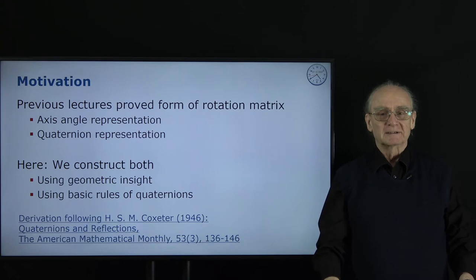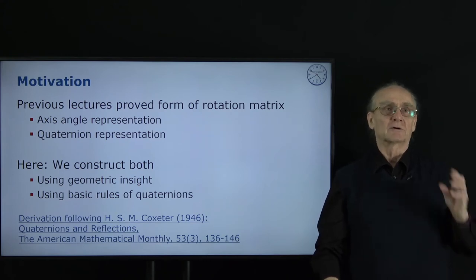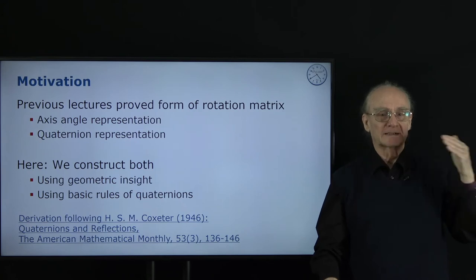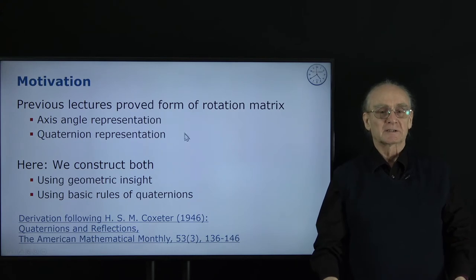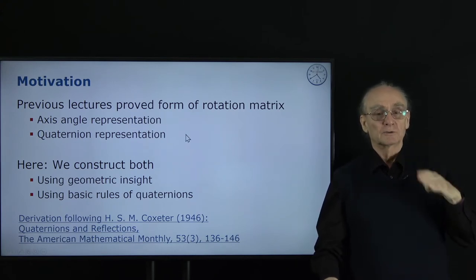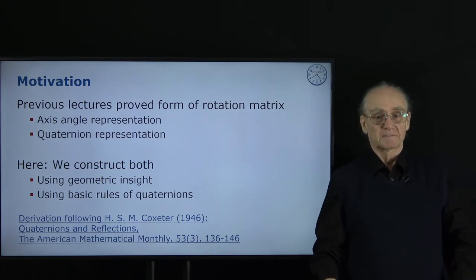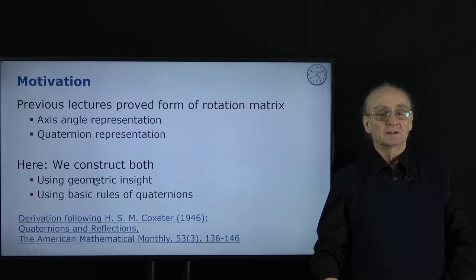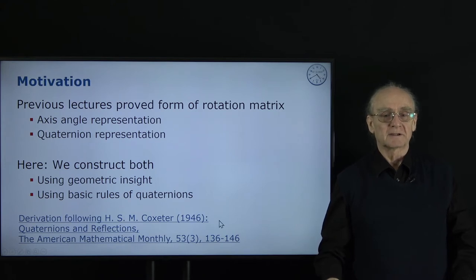The motivation behind this lecture is that in the previous lectures I proved the form of the rotation matrix — I gave it, and then we made a proof for the axis-angle representation and the same for the quaternion representation. What this lecture is about is that we construct both using geometric insight on one side and using basic rules of quaternions. The idea for this constructive way to generate rotations goes back to Coxeter, one of the biggest geometers in the last century.